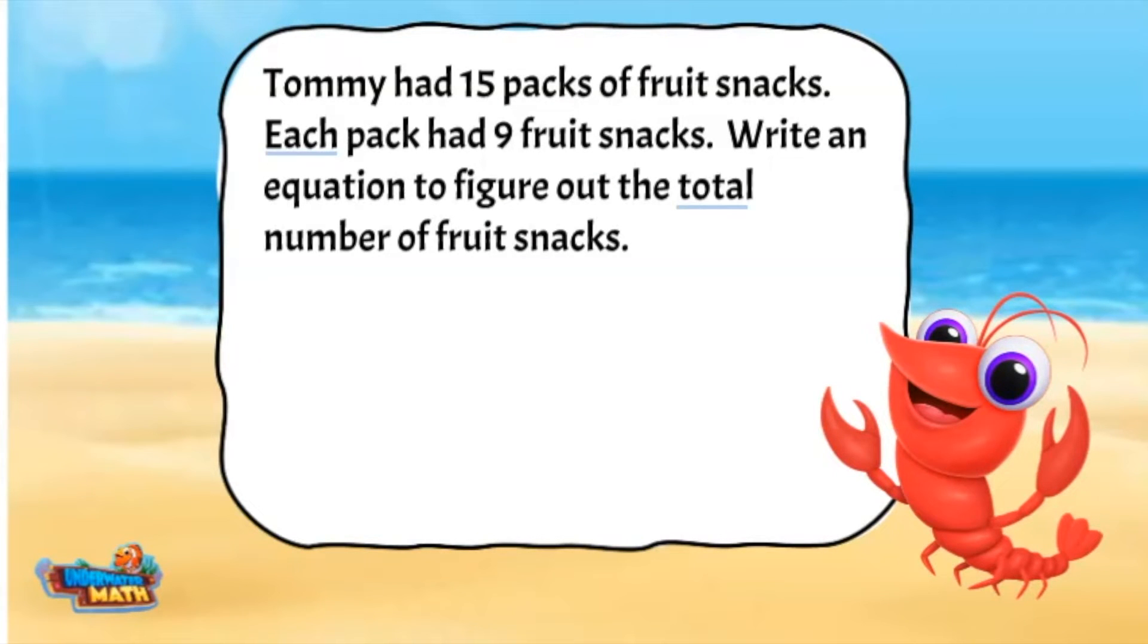The words each and total give us clues as to what to do with our numbers. There are 15 packs and each has 9 snacks. We need to multiply to find the total number of snacks. The equation will look like this: 15 times 9 equals F.